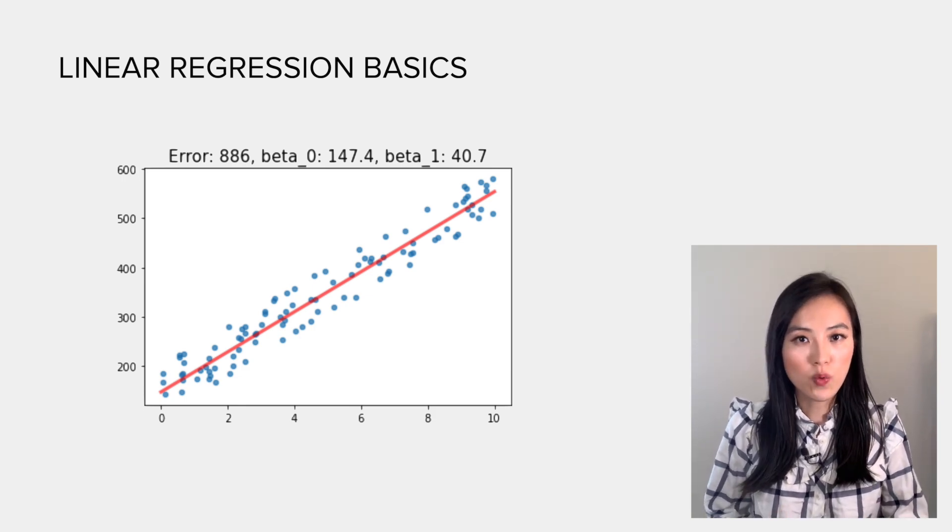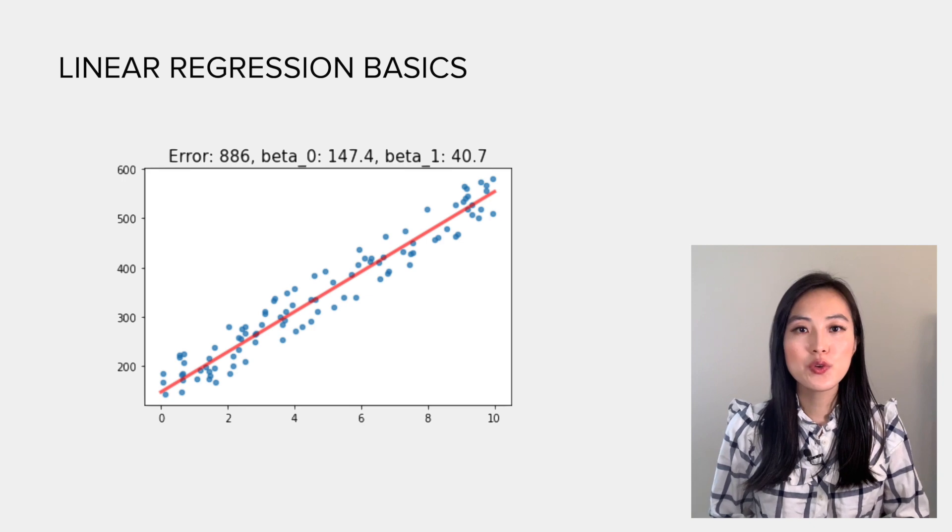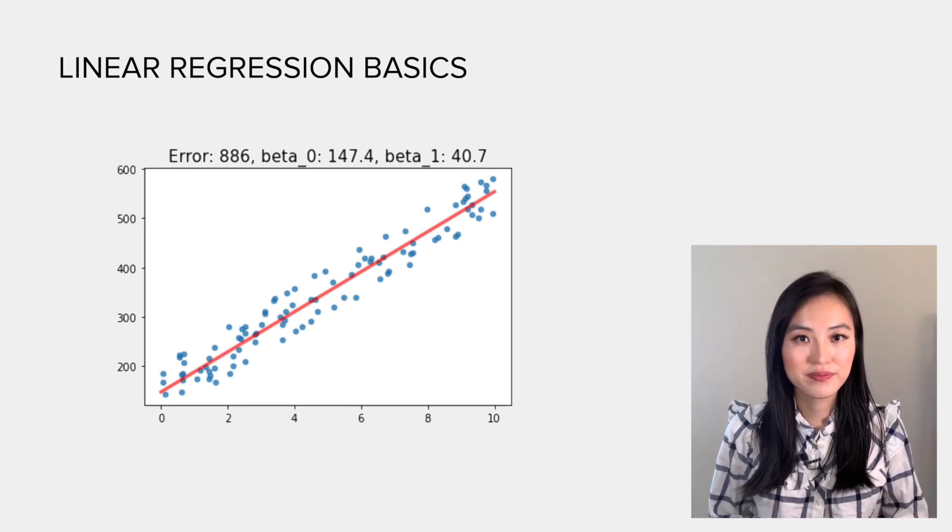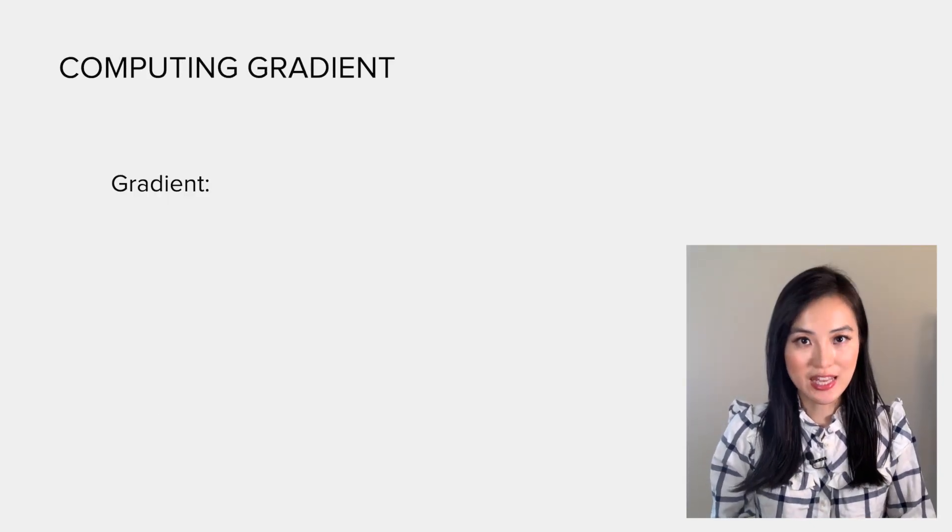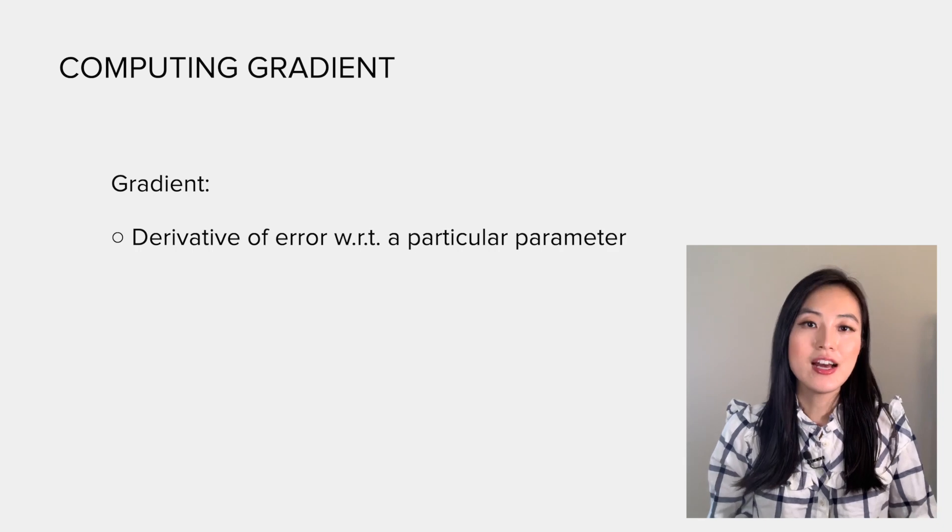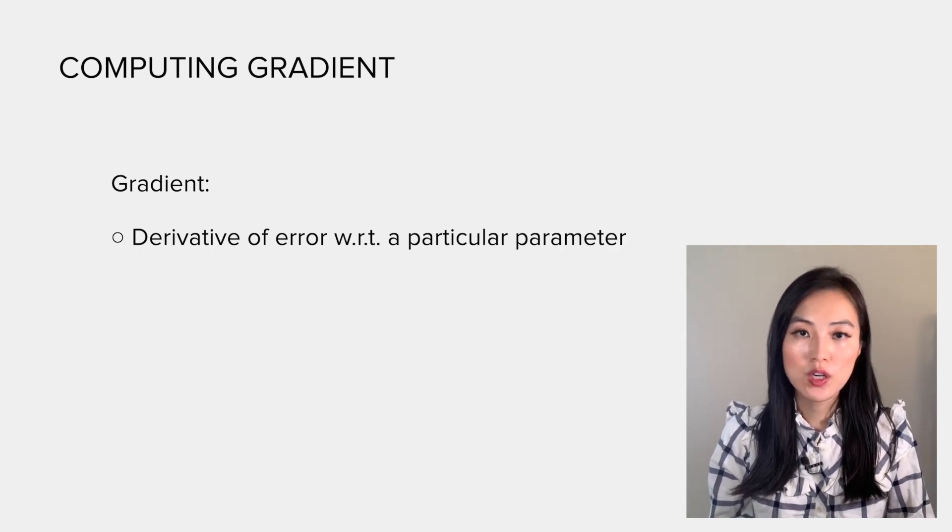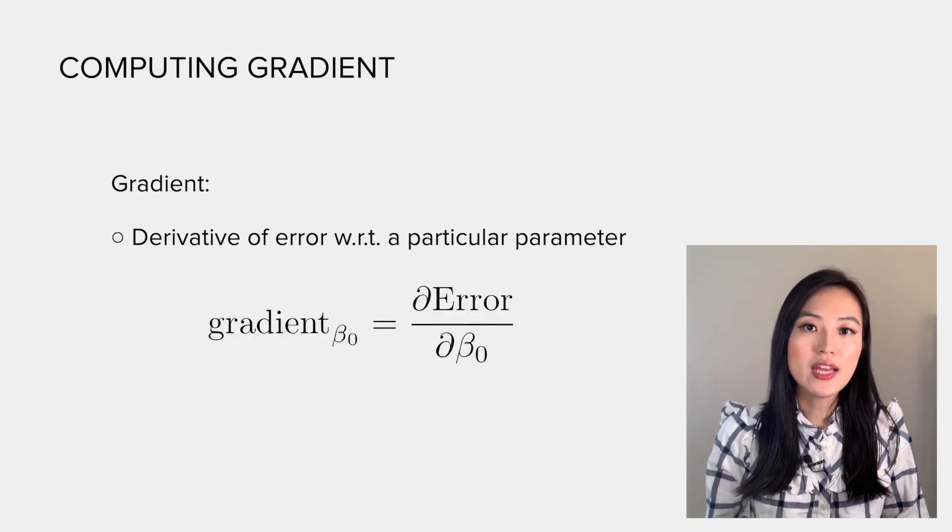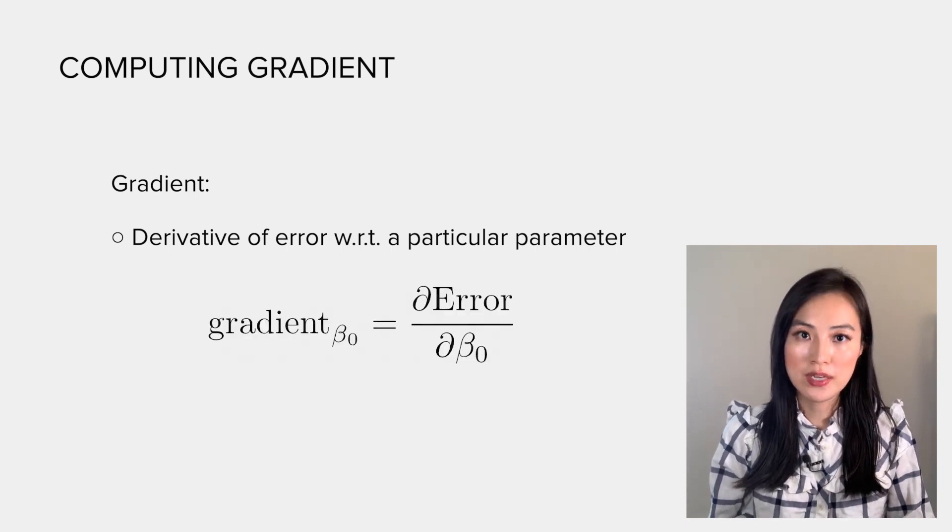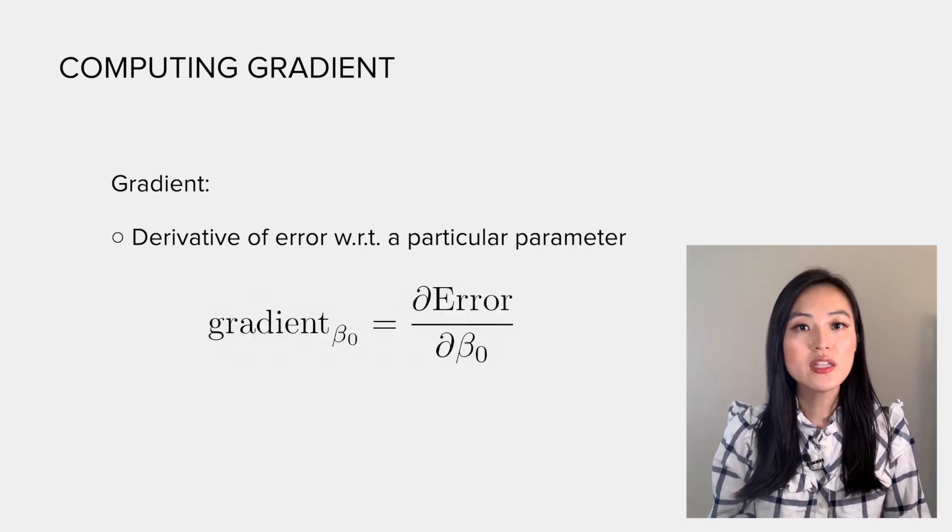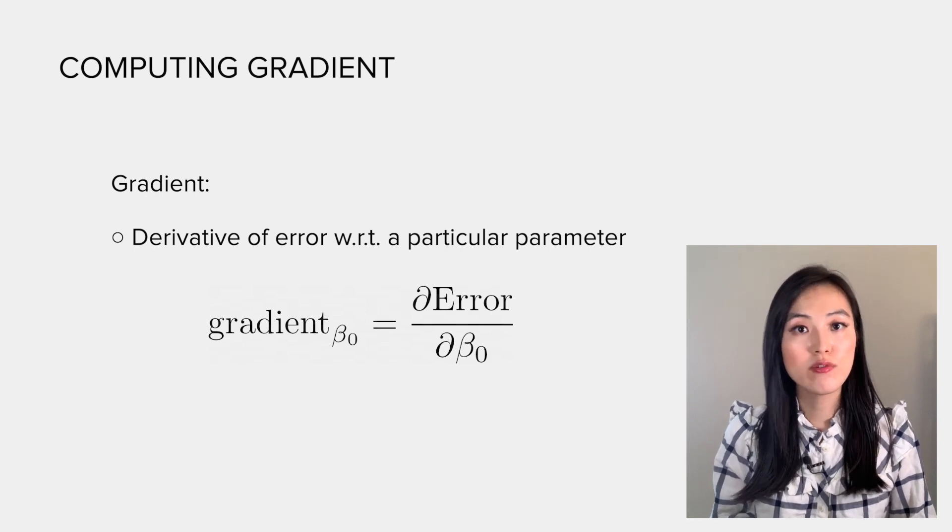Now you understand how it works conceptually. Let me show you how to compute the gradient. First of all, what is exactly a gradient? Actually, it's just the derivative of error with respect to a particular parameter. So the gradient at beta_0 is the error with respect to beta_0, and we can decompose the gradient using the chain rule.